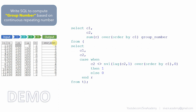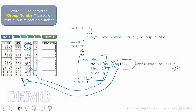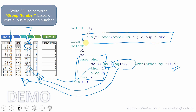Just to recap our learning: in step 1 we use the LAG function to get the previous row's value into the next row. In step 2 we use NVL to handle the first row's null value, substituting 0 as the default. In step 3 we use a CASE WHEN clause to print either 1 or 0 based on the comparison between column C2 and the step 2 computed value. In step 4 we use the SUM analytical function to compute the cumulative sum, which is our final group number.